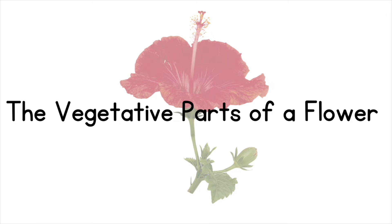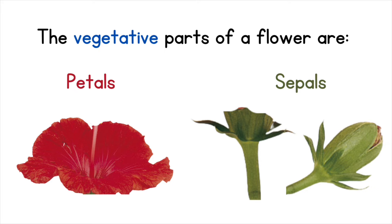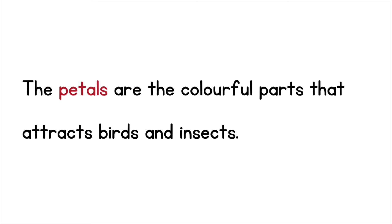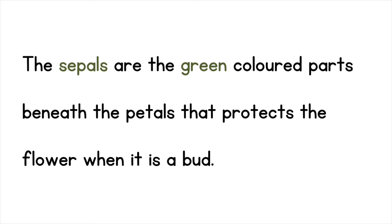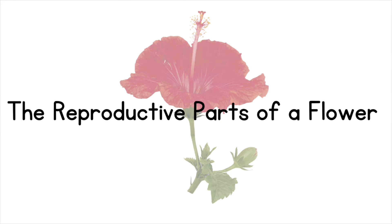The vegetative parts of a flower are: 1. Petals and 2. Sepals. Petals are the colorful parts that attract birds and insects, while sepals are the green-colored parts beneath the petals that protect the flower when it is a bud.